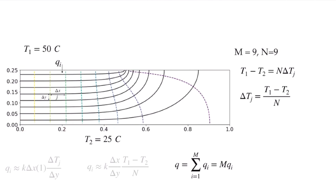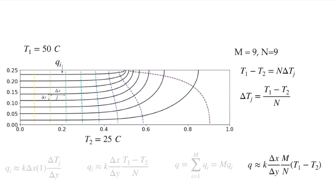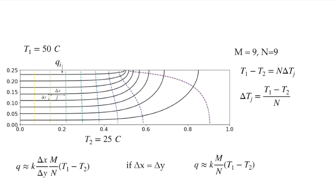To get the total heat transfer rate, it's simply the summation of all individual lanes. Because they're equally spaced, all the qi's are the same, so the sum is simply the number of lanes m times that individual qi. My total heat transfer rate equals conductivity times delta x over delta y times m over n times the known temperature difference. If I draw the picture such that delta x equals delta y — making each intersection as close to a square as possible — that ratio cancels out, giving q approximately equal to k times m over n times T1 minus T2.